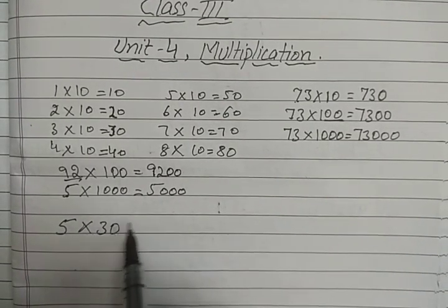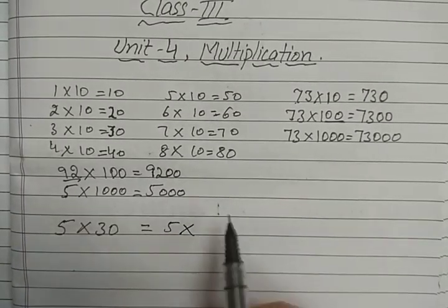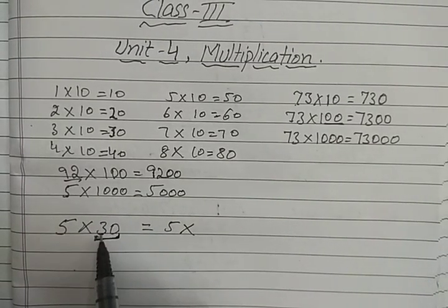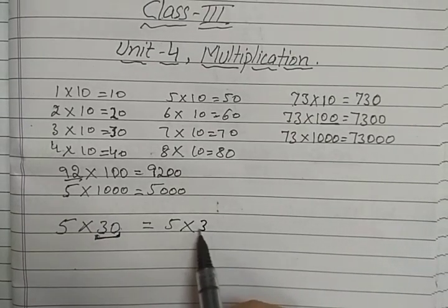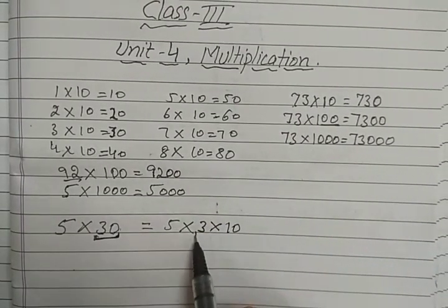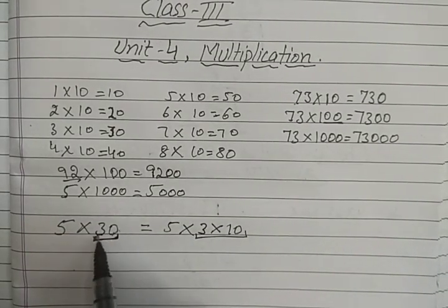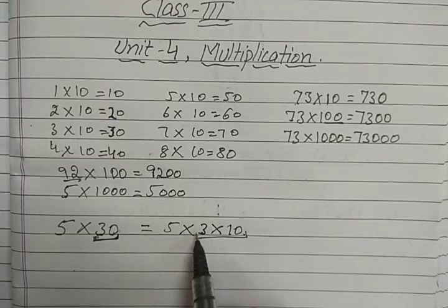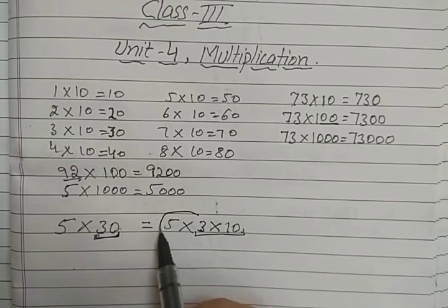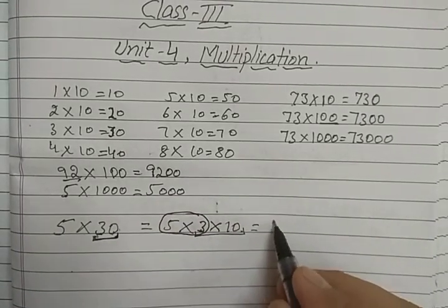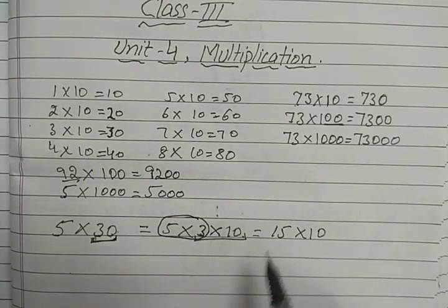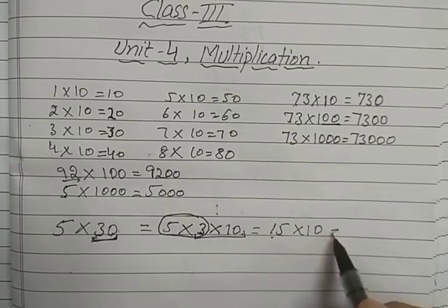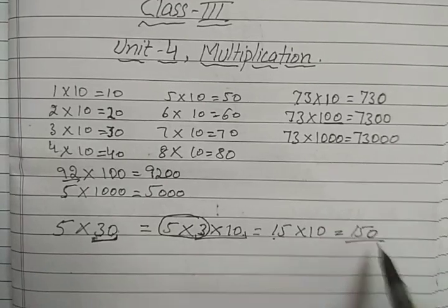Let us multiply 5 by 30. We can break this as: 30 is 3 tens, so write it as 5 multiplied by 3 multiplied by 10. Now multiply the first two numbers: 5 times 3 is 15, then multiply by 10. We already know how to multiply by 10 — write the number and then add zeros on the right side. So the answer is 150.